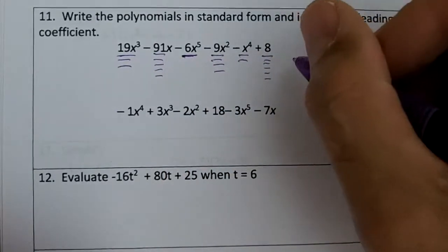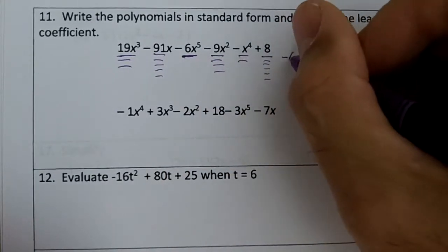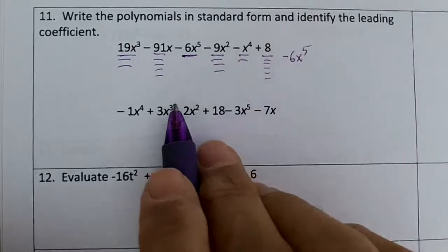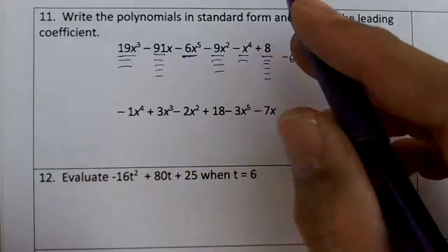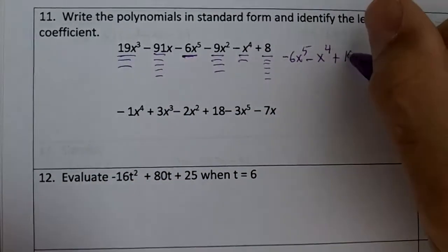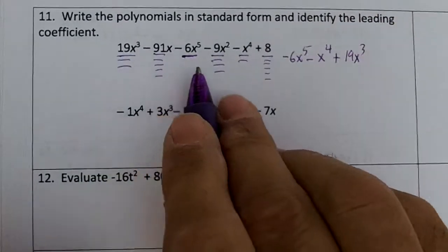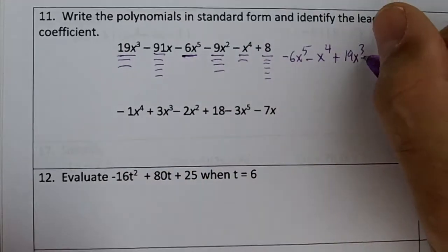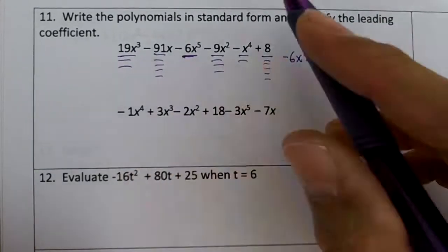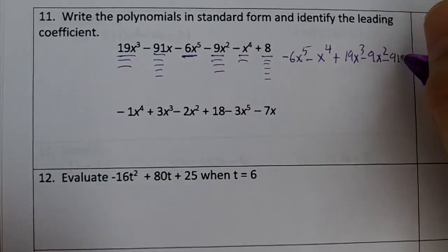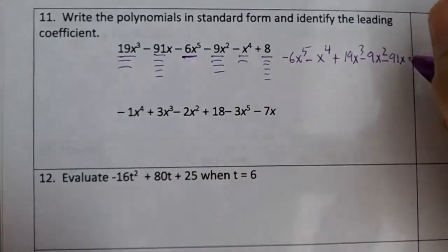So we're going to start with 6x to the fifth, so minus 6x⁵. The next one would be the negative x to the fourth. Then we have plus 19x³ and then the squared would be minus 9x². And then we have your x would be minus 91x. And then the last one would be our plus 8.